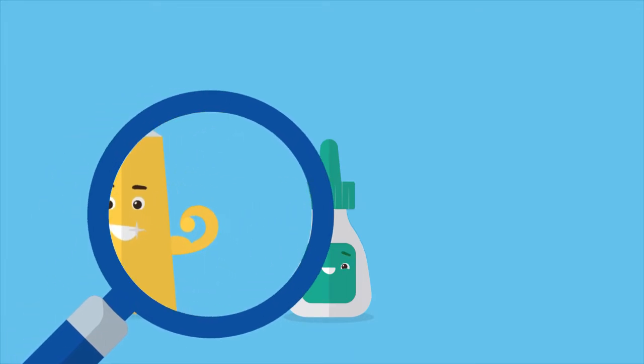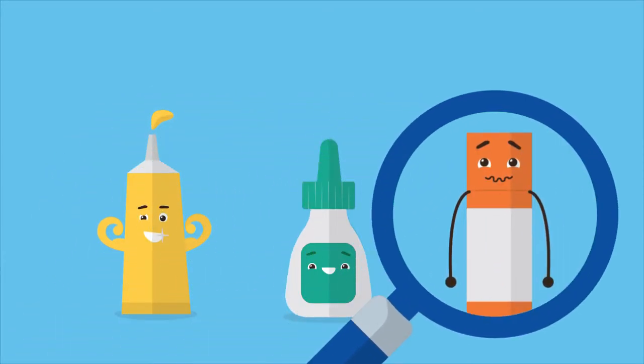From the post-it story we learned that Spencer Silver was looking for a very strong glue but instead he bumped upon a very weak one.